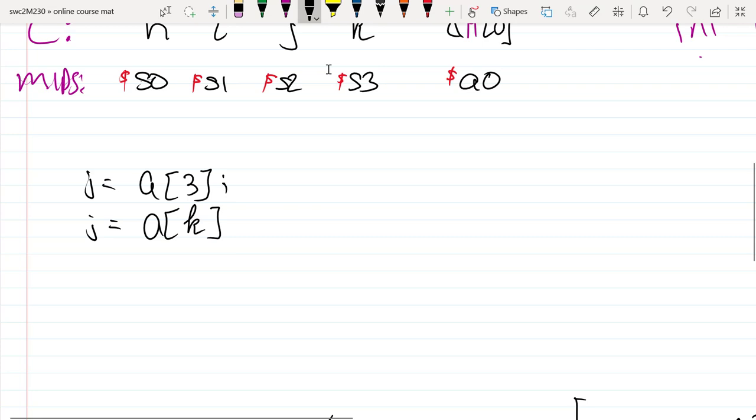I'd like to be able to take something like j equals a sub 3 in C code or j equals a sub k and convert those values to MIPS. This one is probably the easier or possibly the easiest one to do since it doesn't require as much code. What we know is that the array element at a sub 3 is going to be 12 bytes away from the beginning.